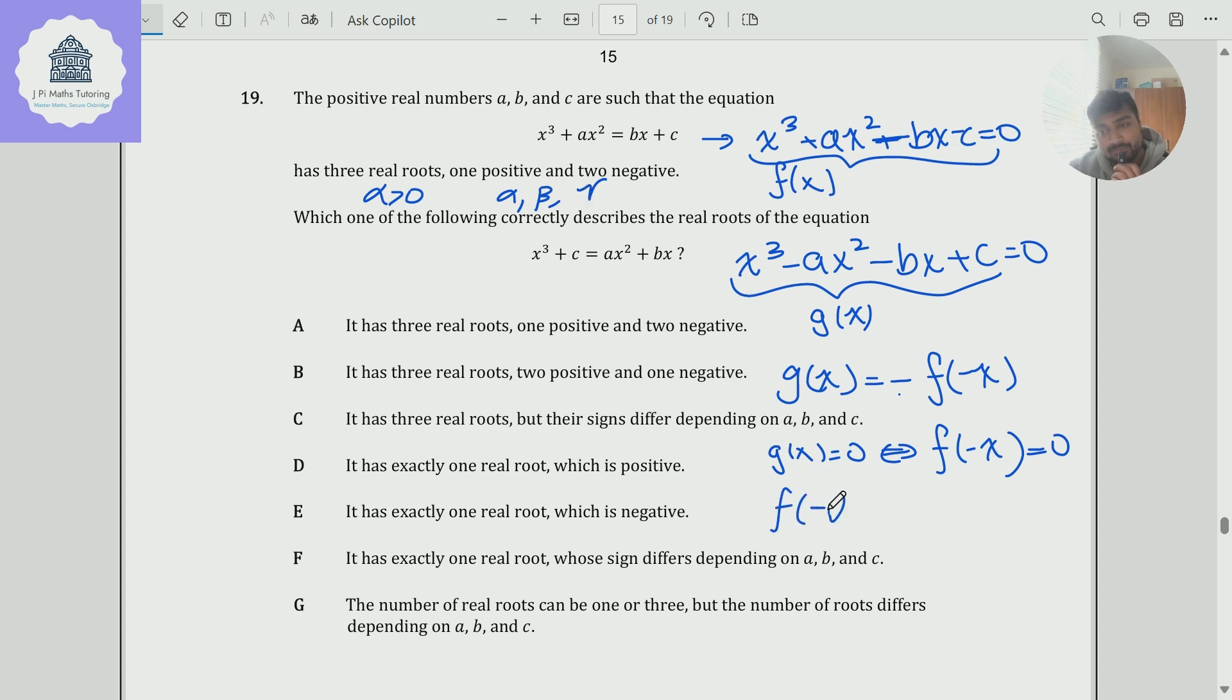Well, that means then that f of minus alpha will equal zero. And so therefore, one of the roots of g is minus alpha. And similarly, g of minus beta and g of minus gamma will also be zero. And so therefore, g has three real roots.